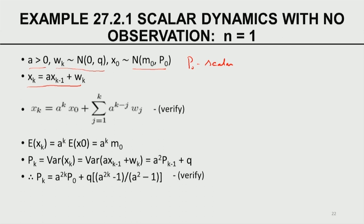We have talked about the values of A, W_K, and X naught. The solution for this linear recurrence can be given by substitution — I would like you to verify the correctness of this equation by substituting back using the method of substitution. From here we get this solution. Taking the mean of both sides — please remember the mean of W_J is 0 and W_J's are temporally uncorrelated — therefore the second term does not contribute anything.